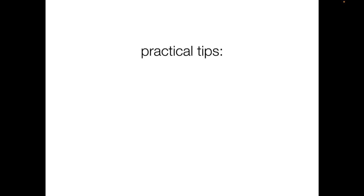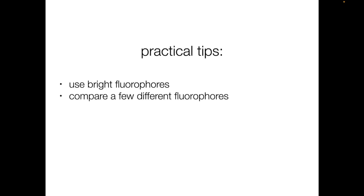Here are some practical tips. First, use bright fluorophores. The brighter the fluorophores, the less excitation light you'll need to generate a usable image. If you were to use a dim fluorophore with similar photostability, you'd need more excitation light and you'd end up with faster photobleaching. Second, try a few different fluorophores rather than sticking with the first one you find. Measuring and comparing the innate photostability of fluorophores is difficult, but comparing the photobleaching rates at your own microscope is straightforward.